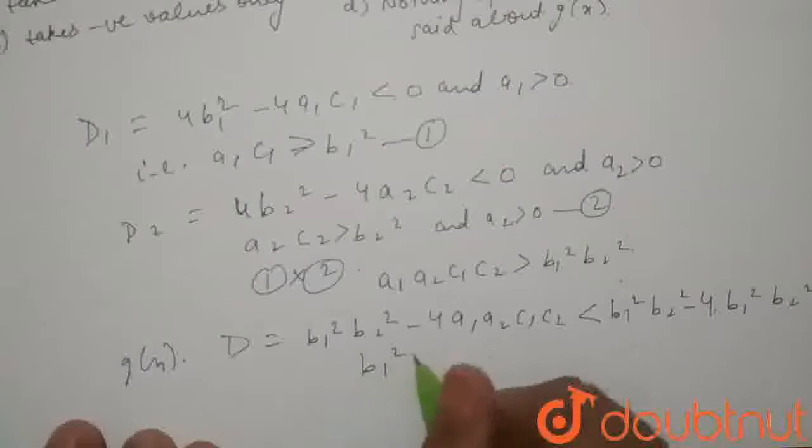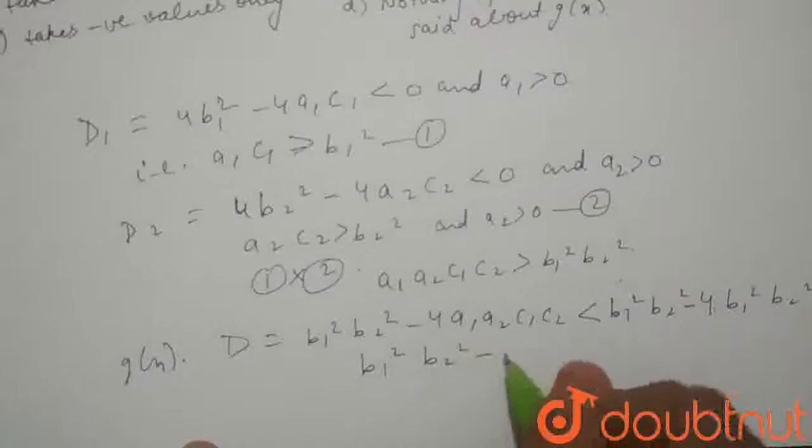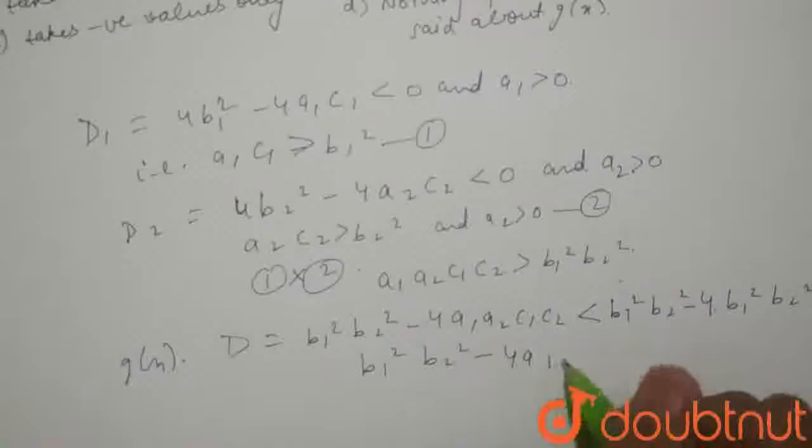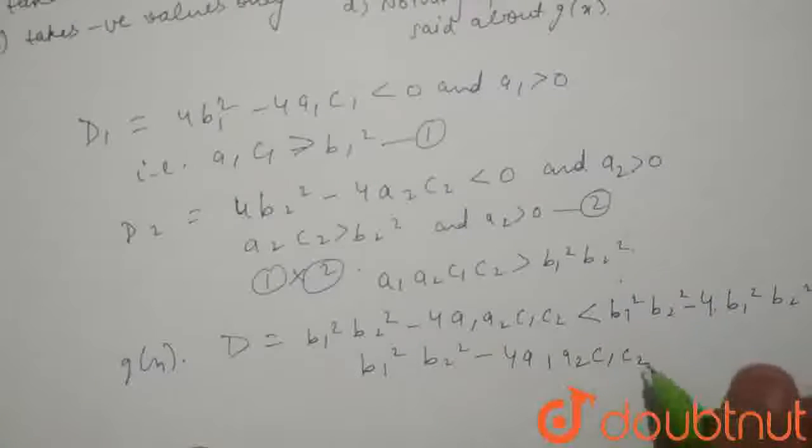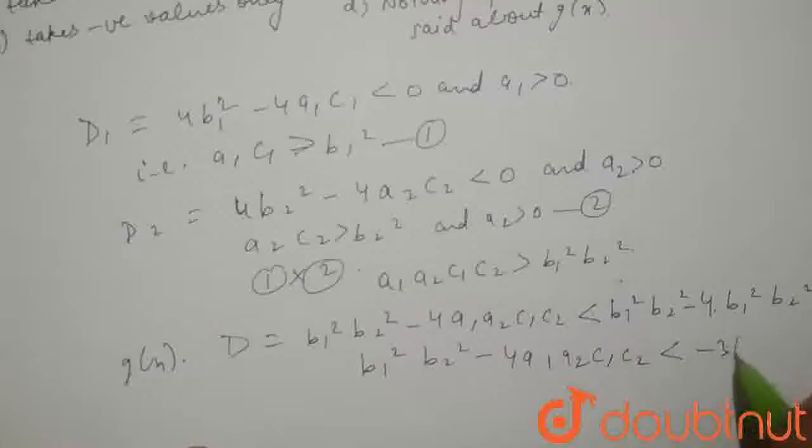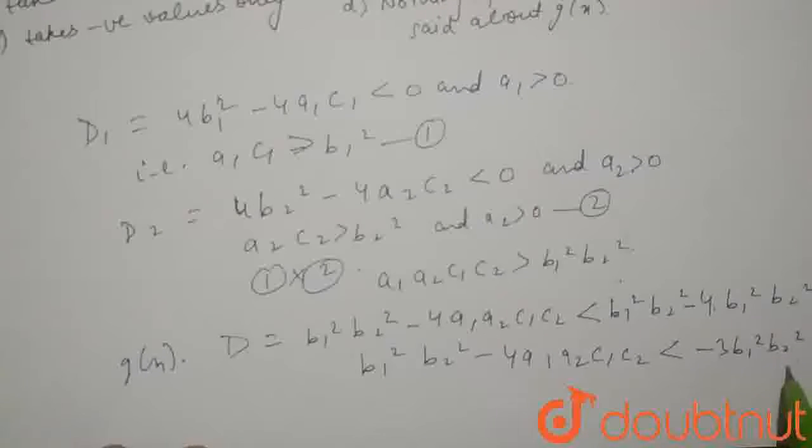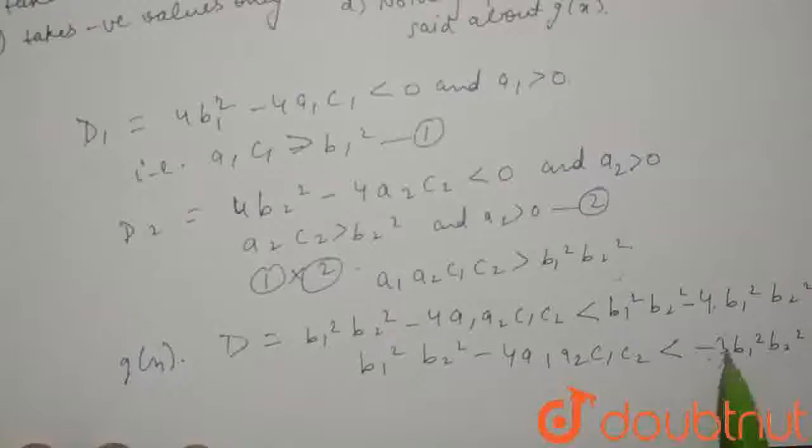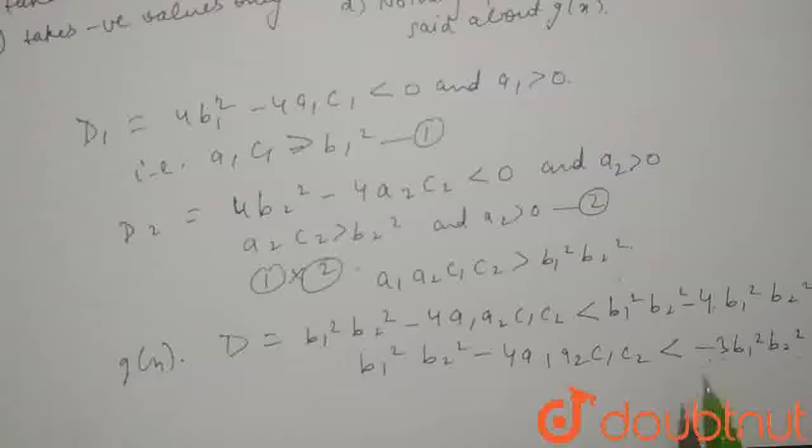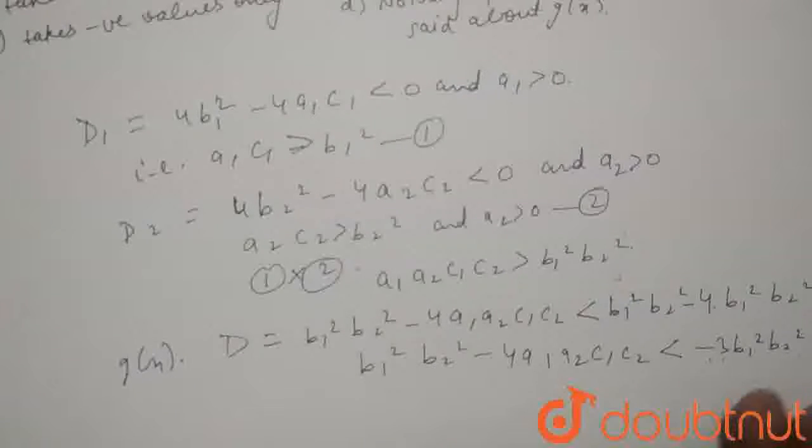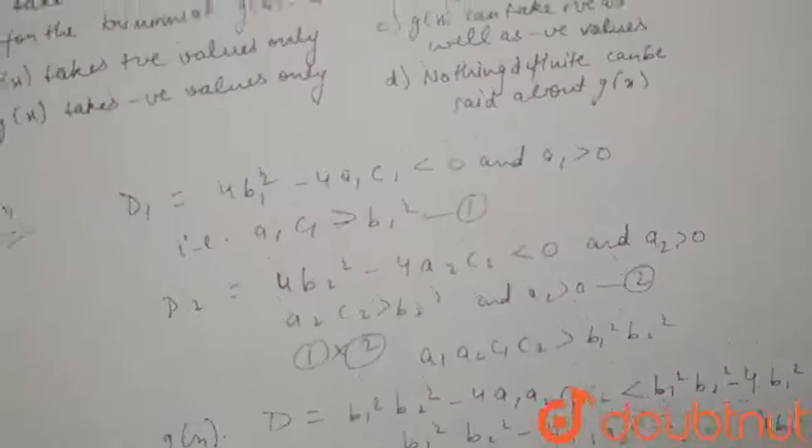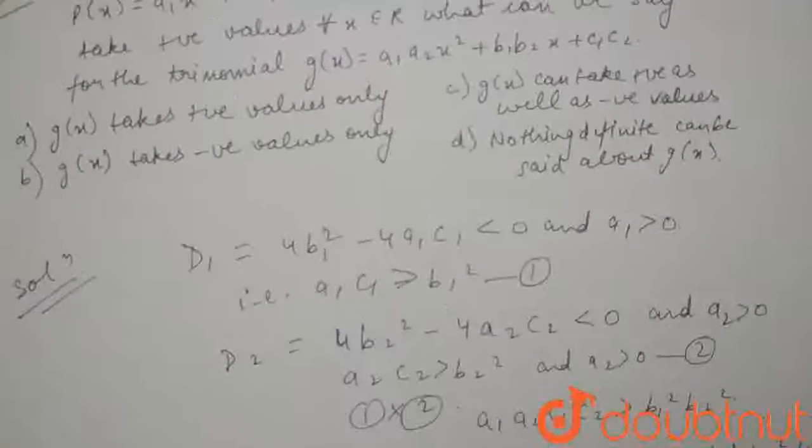So, we can see the discriminant of g(x), which is b₁²b₂² - 4a₁a₂c₁c₂, is less than -3b₁²b₂². Since b₁²b₂² is always positive and -3 is negative, it is less than a negative quantity, so it is more negative. We can see that the discriminant of g(x) is always negative. When it is always negative, then g(x) will always take positive values.